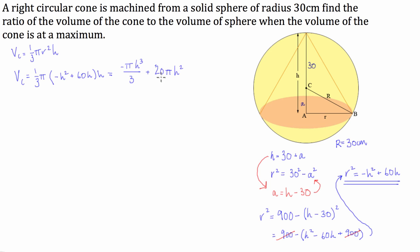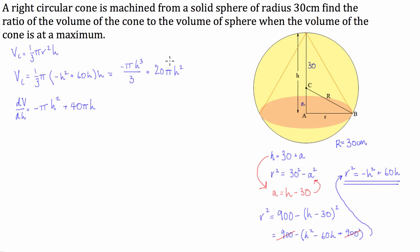Now we can do a single-variable differentiation. We're going to calculate the derivative of the volume with respect to height. Multiplying through, we get negative pi H squared plus 40 pi H. Because the maximum volume of the cone will occur when the derivative is equal to zero, we set this equal to zero.